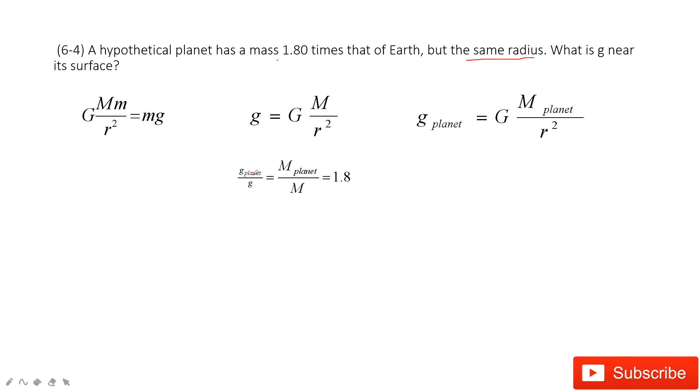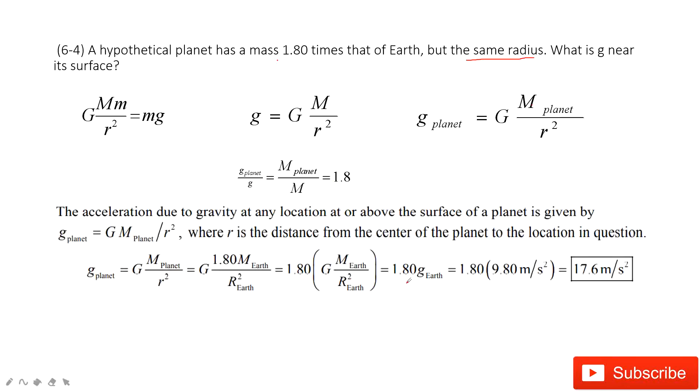Therefore, you can get this g on the planet is just 1.8 times g. So 1.8 times 9.8 meters per second squared. We get the final answer. Thank you.